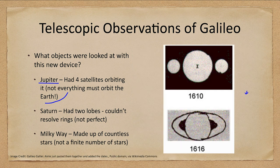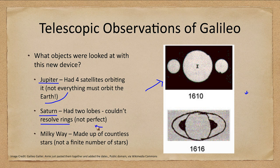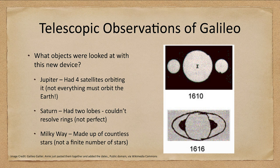He also looked at Saturn, which had two lobes — he would see two blobs on either side. He didn't quite have enough power to resolve it into the rings, but Saturn was very unusual and not perfect. Finally, looking at the Milky Way — which appears as just a patch of dull light in the sky — he found it was actually made up of countless stars, far more than might have been previously thought.